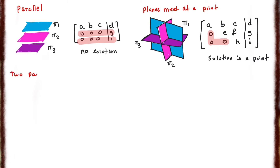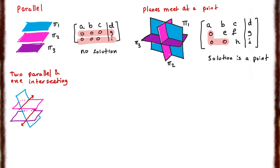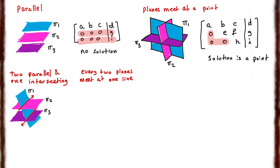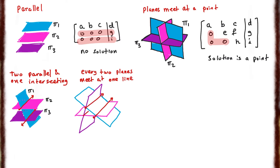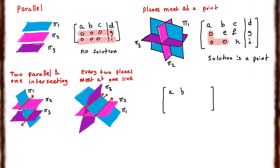For the next two situations: one is where two planes are parallel and one intersects both, producing two lines of intersection. The other is where every pair of planes meets at a line, giving three lines of intersection. In both cases there is no single point or line as a solution. The matrix's last row will have zero coefficients with a non-zero constant, meaning no solution.